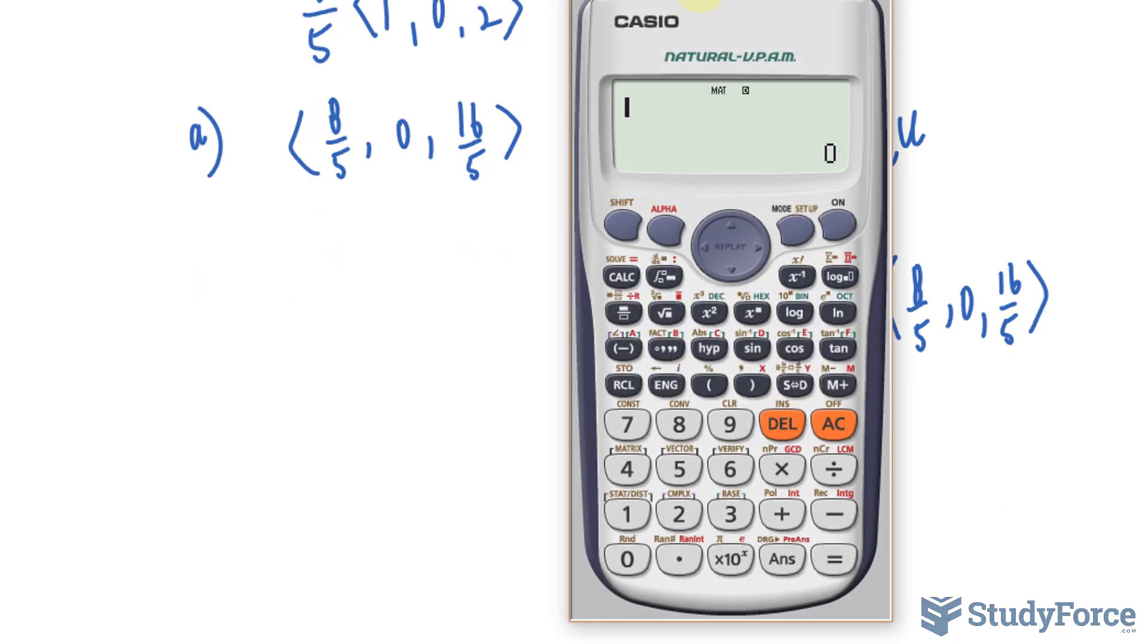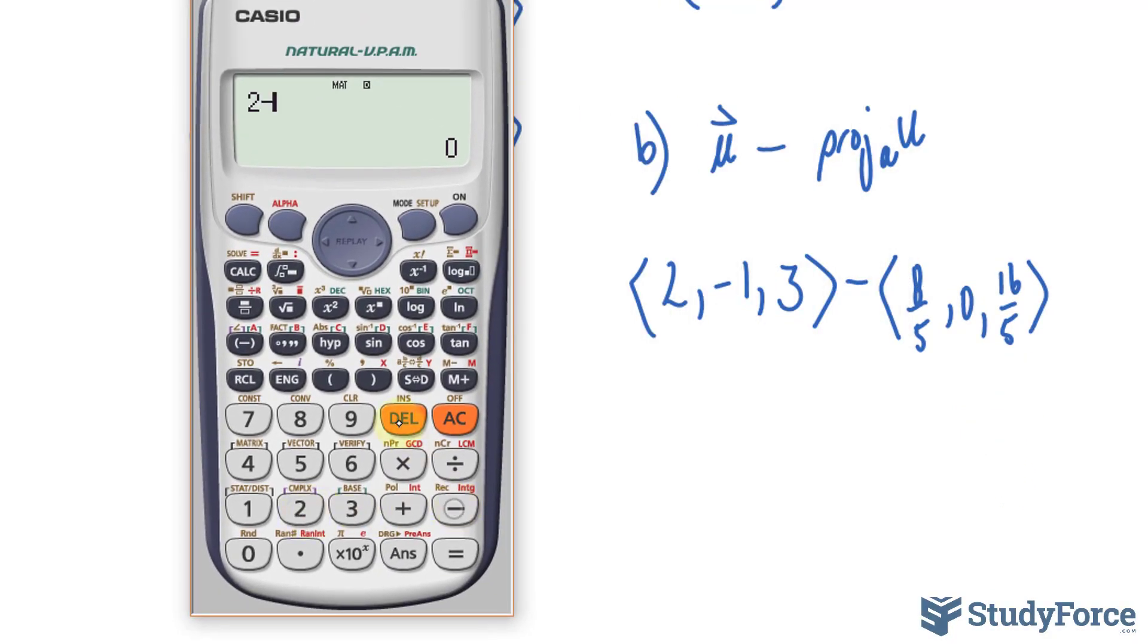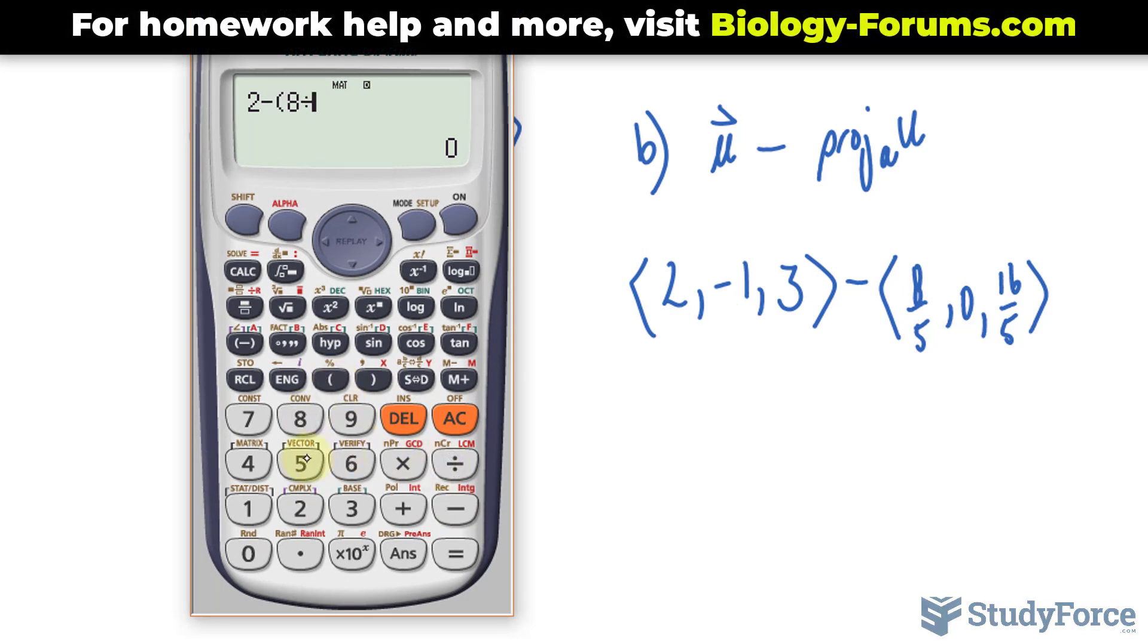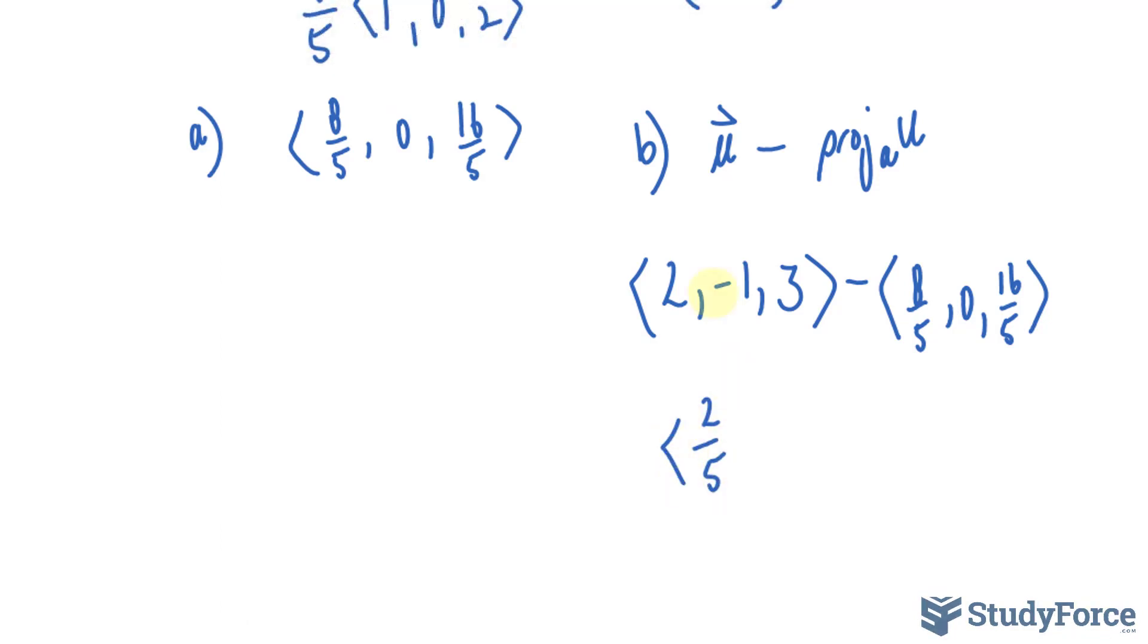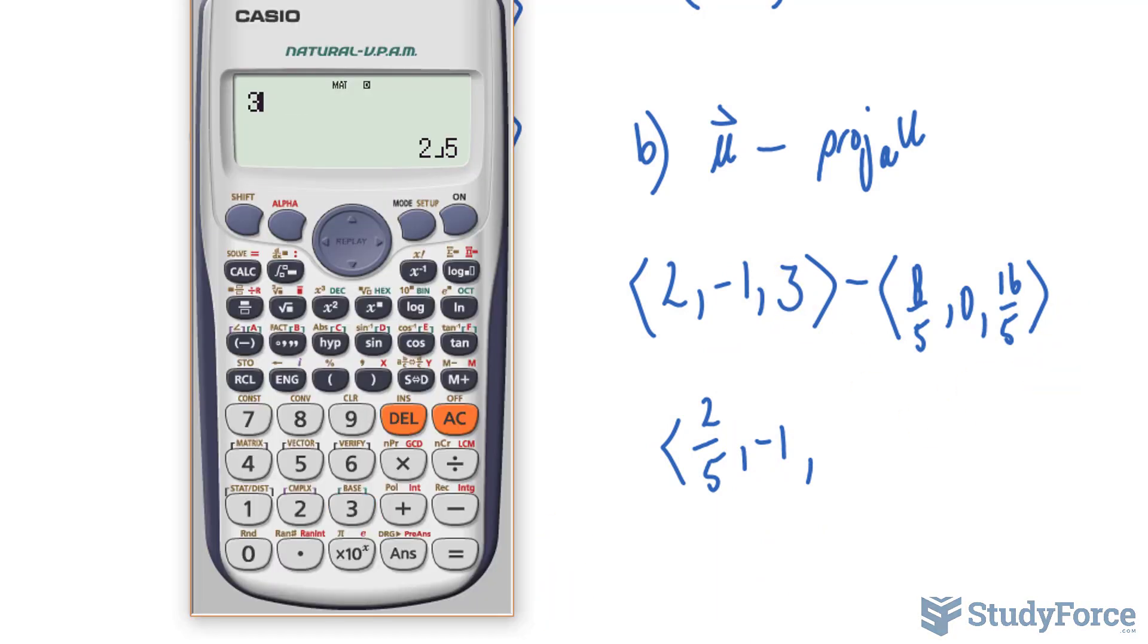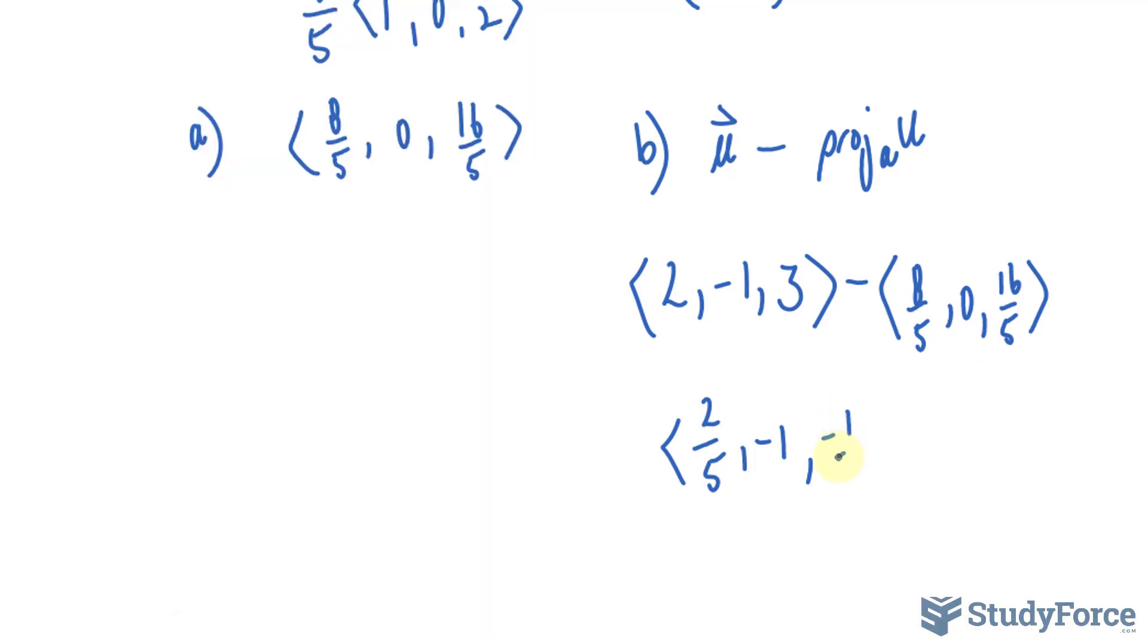Using our calculator, if we subtract 2 minus 8 over 5, we end up with 2 over 5, negative 1 minus 0, that's negative 1, and 3 minus 16 over 5, that gives us negative 1 over 5.